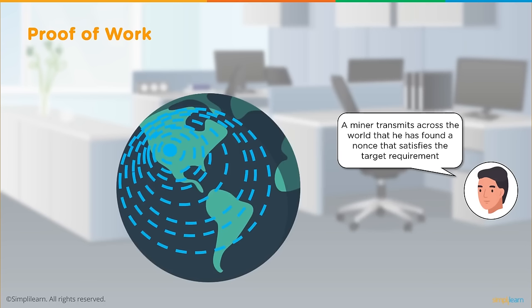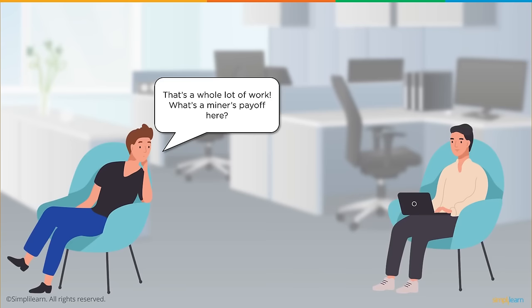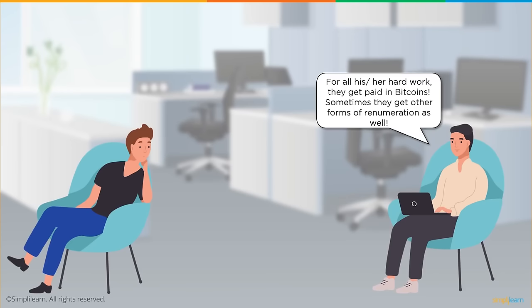A miner who finds a valid nonce transmits this across the world. Thanks to the hashing algorithm, this claim can be easily verified by others — proof of work is hard to generate but easy to verify. For all this hard work, miners are paid in bitcoin — the only way new bitcoins enter the network. Sometimes they receive other forms of remuneration as well. This entire process is the concept of mining.